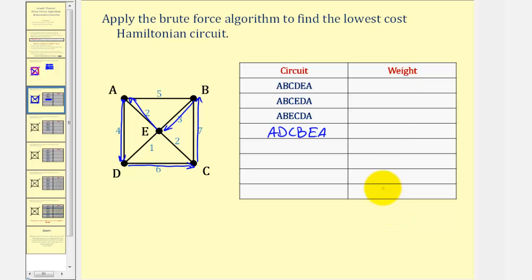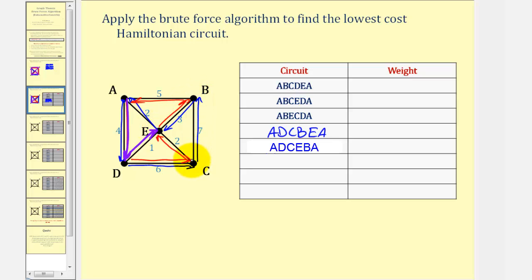We'll go ahead and find these weights at the very end. Next, let's go back to A, D, C. And now instead of going to B, let's go to E. So we have A, D, C, E, B, A. We have one more starting with A and then D. We can go from A to D, and then instead of going to C, we'll go to E. Again from here we only have one choice — we can't go to B because if we go from B to C, we can't get back to A without using a vertex twice. So A, D, E, C, B, A.